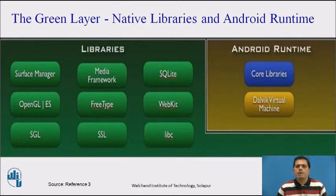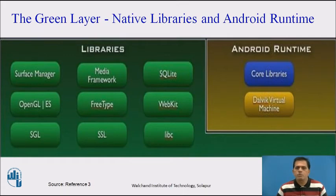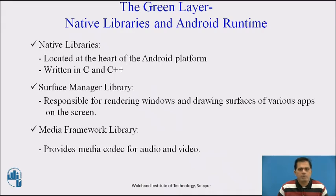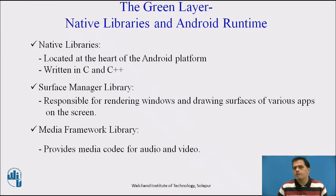The green layer contains native libraries and the Android runtime. It includes libraries like Surface Manager, OpenGL, SGL, SSL, SQLite, and WebKit. On the right-hand side we see Android runtime, which contains core libraries and the Dalvik virtual machine. Native libraries are located at the heart of the Android platform and are written in C and C++. The Surface Manager library is responsible for rendering windows and drawing surfaces of various apps on the screen. The Media Framework library provides media codecs for audio and video.